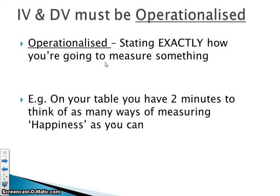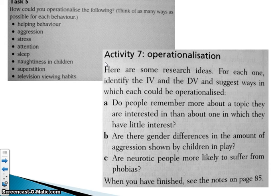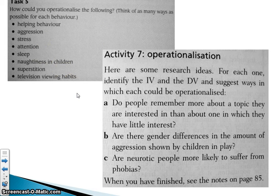Operationalising means stating exactly how you are going to measure something. For example, if we wanted to operationalise stress, we could think about what signs people show when stressed. An easy approach would be to ask people: 'How stressed were you about exams on a scale of 1 to 10?' — 1 being not very stressed, 10 being very stressed.